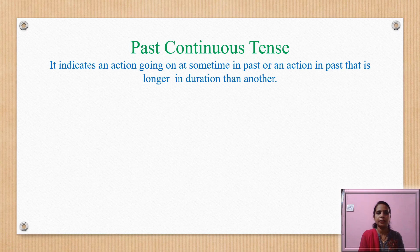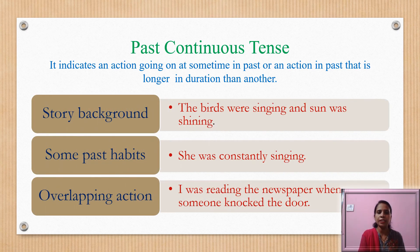Past continuous tense indicates an action going on at some time in the past, or an action in the past that is longer in duration than another. Any action that was in continuation at any time in the past is called past continuous. For story background, while narrating stories, we use past continuous tense. For example, 'The birds were singing and the sun was shining.'